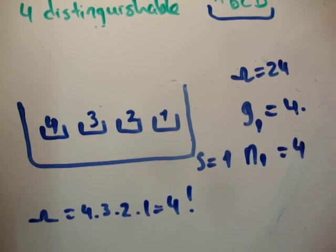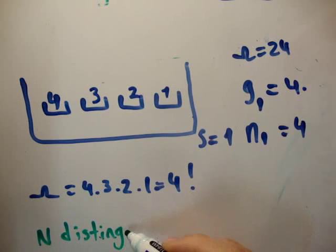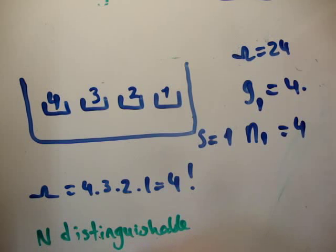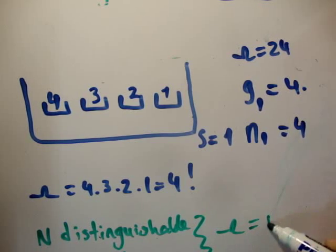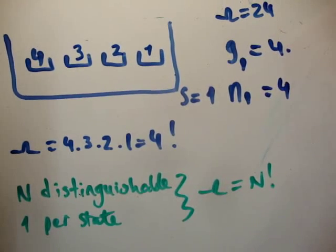So in general, where you have N distinguishable, one per state, we have omega is equal to N factorial.